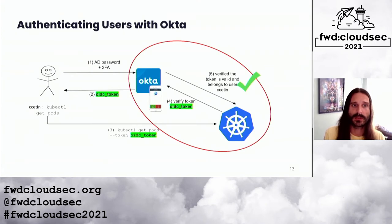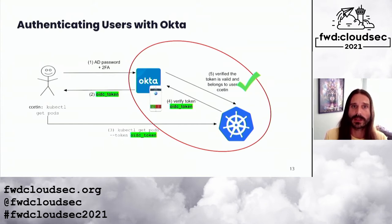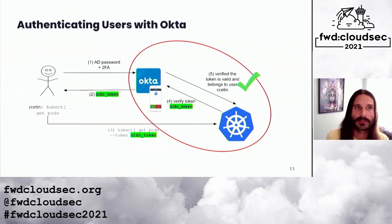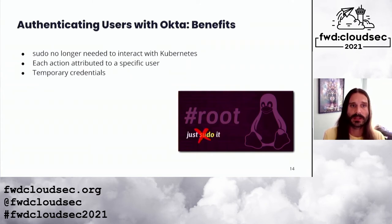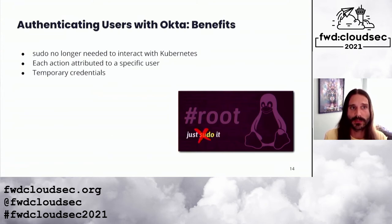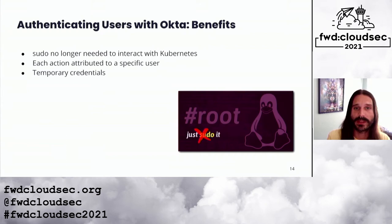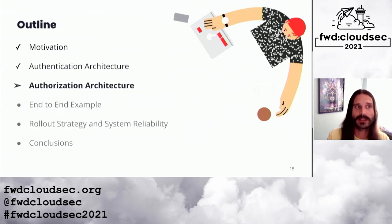The Kubernetes API server then verifies the authenticity of the JWT token by verifying the signature using Okta's public key server. The human user's identity from the token is then propagated downstream for authorization considerations. The benefits of using Okta for authentication are straightforward: root access is no longer needed, each action can be tied back to a specific user, and credentials obtained from Okta are temporary and behind a second factor — mitigating the risk of credential theft and replay attacks.